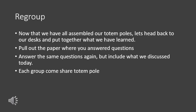Now that we have all assembled our totem poles, let's head back to our desks and put together what we have learned. Students will pull out the paper where they originally answered questions on totem poles — what materials were used to construct them, and what types of things they represent — and answer the same questions again, hopefully expanding based on today's lesson. Each group will then come to the front of the room and share their totem pole, briefly describing which animal they included and why. Students who prefer not to present in person can submit a Google Slide on their animal and why they included it.